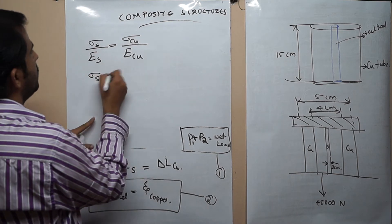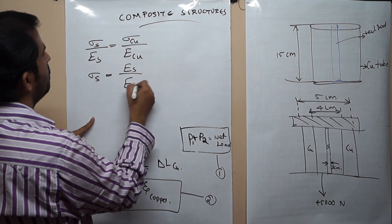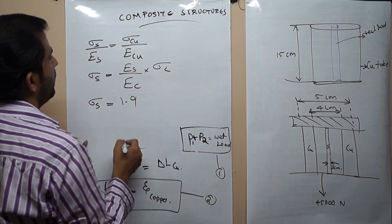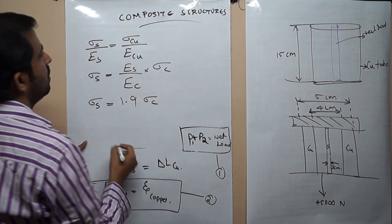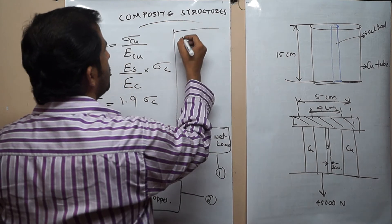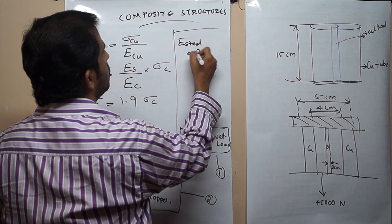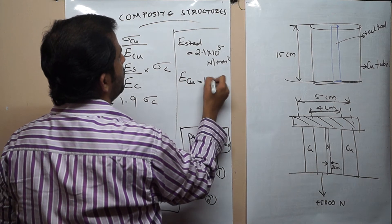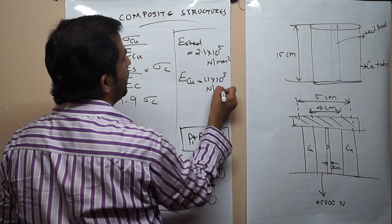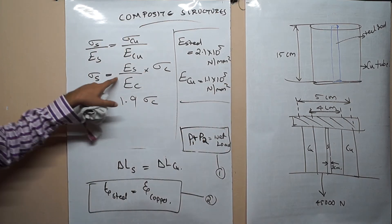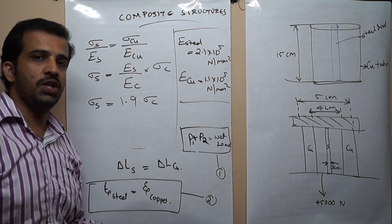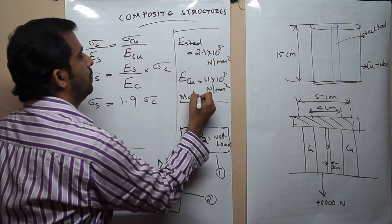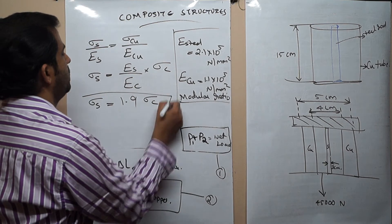From the compatibility condition, sigma_S equals E_steel divided by E_copper into sigma_C. Therefore sigma_S equals 1.9 sigma_C, because E_steel is 2.1 × 10^5 N/mm² and E_copper is 1.1 × 10^5 N/mm². The ratio E_S divided by E_C is the modular ratio, which equals 1.9.